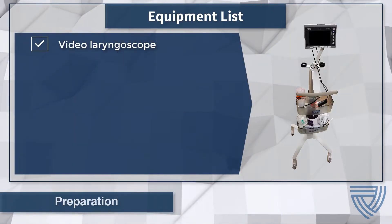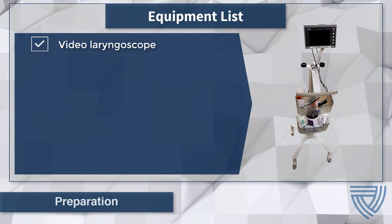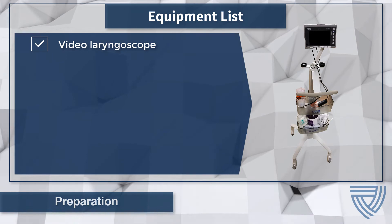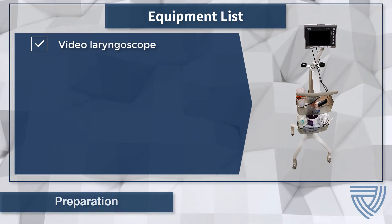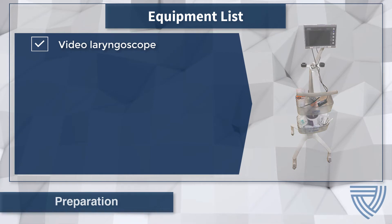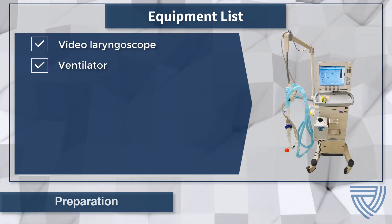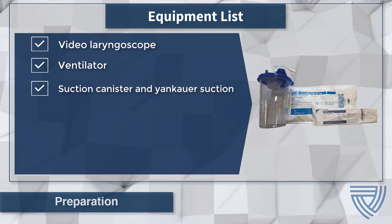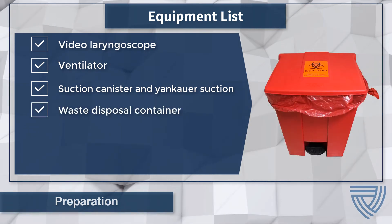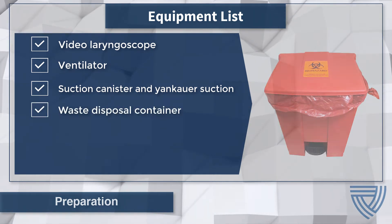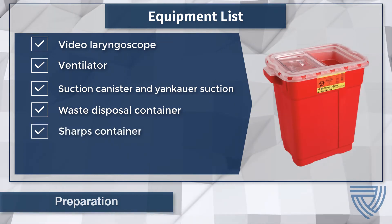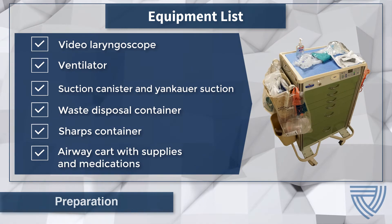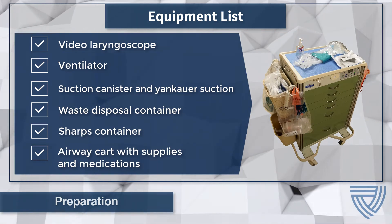Necessary equipment for the intubation procedure includes: a video laryngoscope (if a video laryngoscope is not available, a traditional laryngoscope will suffice), a ventilator, a suction canister and suction device, an appropriate waste disposal container, an approved sharps container, and an airway cart complete with supplies and medications.